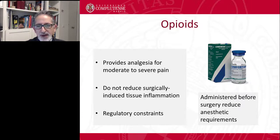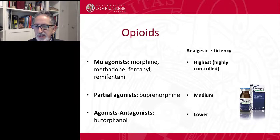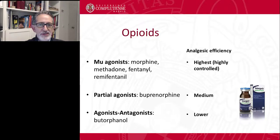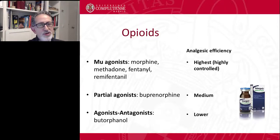Opioids are usually provided before surgery to cover the intraoperative period by providing antinociception and then to provide analgesia in the postoperative period once the animal has recovered. The typical opioids are divided in three groups. Mu agonists like morphine, methadone, fentanyl, or remifentanyl may provide the highest level of analgesic efficacy; however, they are highly controlled and difficult to obtain at some institutions. Partial agonists like buprenorphine may provide a lower degree of analgesic efficacy. And finally, agonist-antagonists probably produce the lowest level of analgesic action among the opiates used clinically.